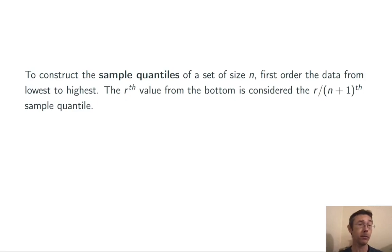We should talk a little bit about what we mean by sample quantiles and theoretical quantiles. To get sample quantiles, you order your data from low to high, take the total sample size n and add 1, and basically divide the interval from 0 to 1 into the right number of pieces. The rth value from the bottom is considered to be the r over n plus 1 sample quantile.